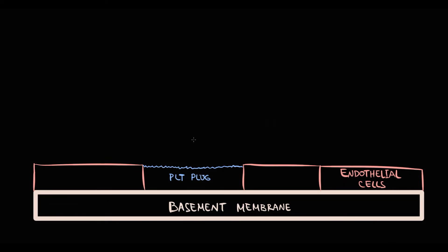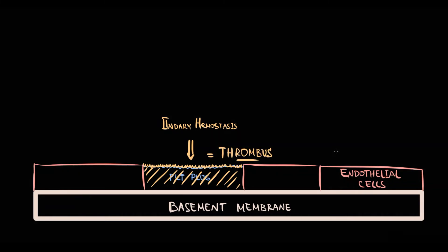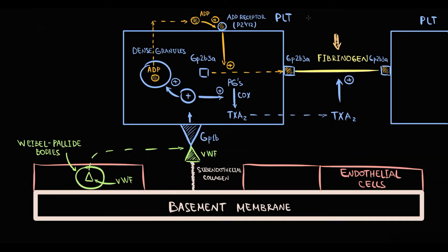But platelet plaque is weak, and to stabilize it, to make it formidable, we have secondary hemostasis. The function of the secondary hemostasis is to make from weak platelet plaque a formidable structure that called thrombus, and the thing that makes this platelet plaque formidable is conversion of unstable fibrinogen into a stable fibrin.